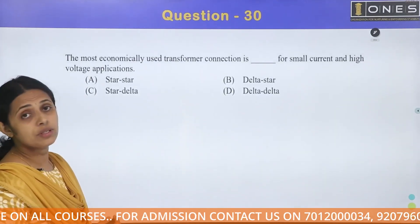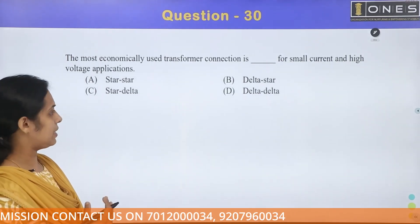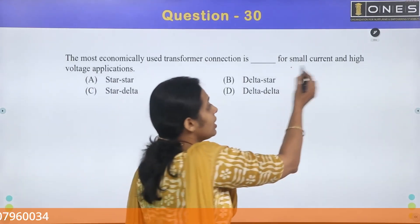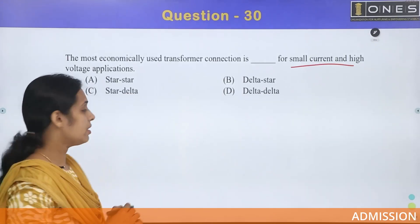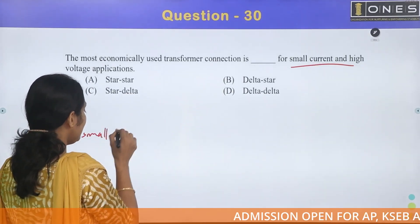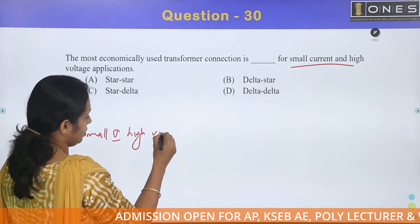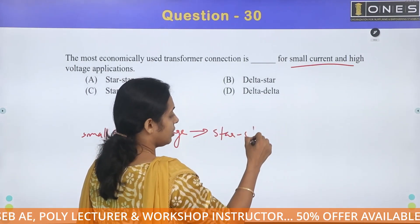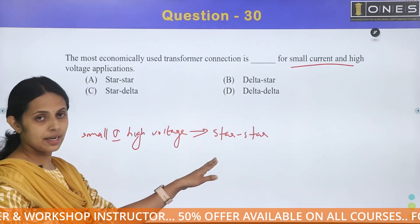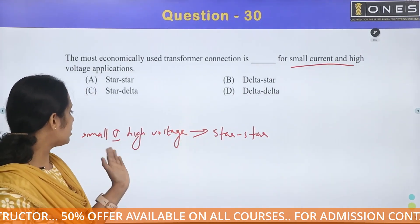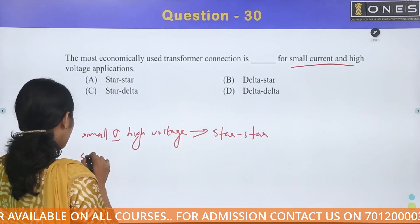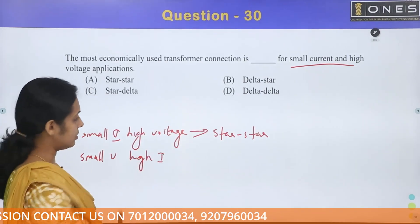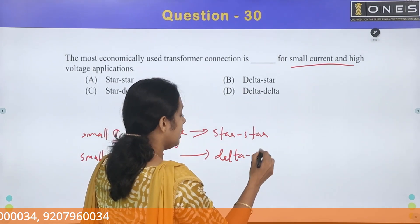Next question: What is the most economically used transformer connection for small current and high voltage application? For small current and high voltage, we normally prefer the star-star connection — primary star connected and secondary star connected.